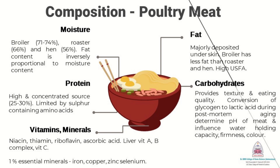The fat is majorly deposited under the skin, and broiler has lesser fat content than roaster and hen. It is considered to be high in unsaturated fatty acids. The carbohydrates in the meat provide texture and eating quality. The conversion of glycogen to lactic acid during post-mortem aging determines the pH of the meat and also has an influence on the total water holding capacity, the firmness of the meat, and the color of the final meat.